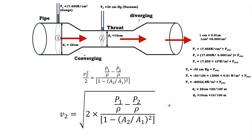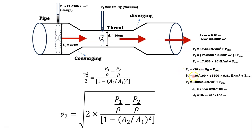Now converting the given values. P1 = 17.658 N/cm² = 17.658 × 10⁴ N/m² (absolute: add Patm). For P2, the vacuum pressure is −30 cm Hg, so P2 (absolute) = Patm − (30/100) × 13600 × 9.8 N/m². Atmospheric pressure Patm cancels when computing P1 − P2.